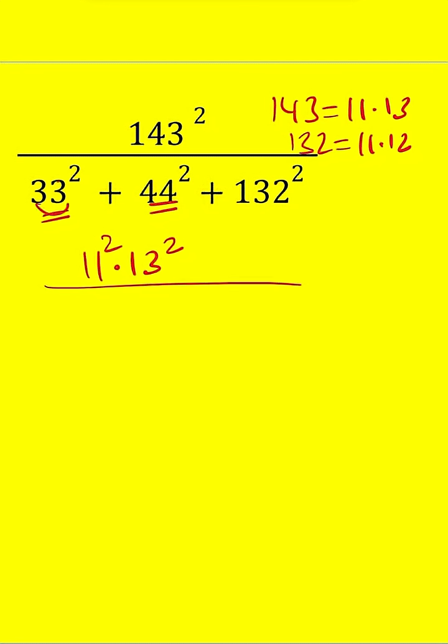And then here we have 3 times 11, which is 3 squared times 11 squared. And then we have 4 squared times 11 squared plus 11 squared times 12 squared.